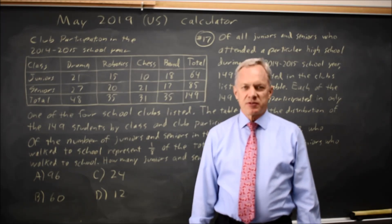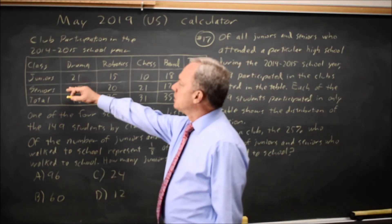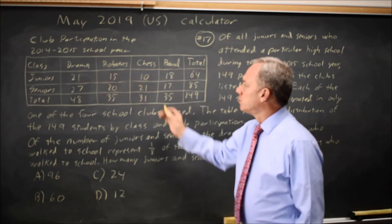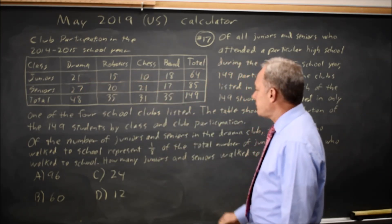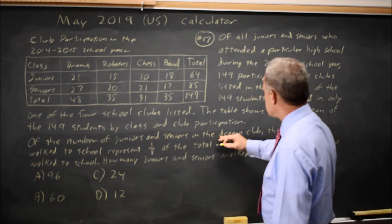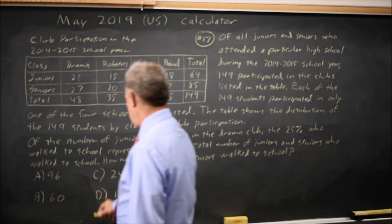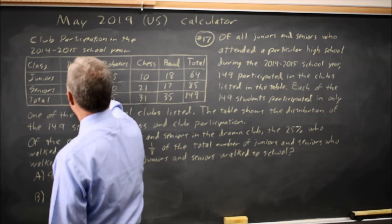This is calculator question number 17. We have a table showing juniors and seniors divided among the clubs that they are members of, and they tell us the number of juniors and seniors in the drama club, that's juniors and seniors in drama here.